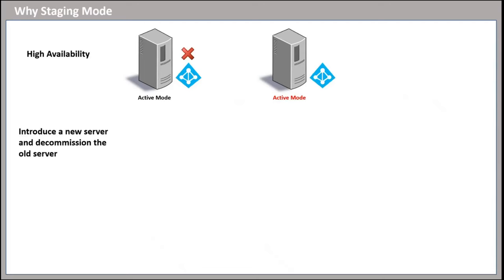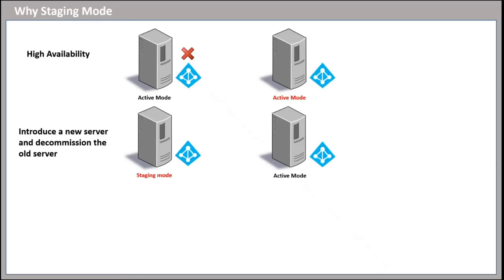The other requirement for a staging mode server is when you want to install Azure AD Connect on a new server and want to decommission the old server. In this scenario, we will convert active mode to staging mode on the current server, install Azure AD Connect on the other server in active mode, and then decommission the old server.